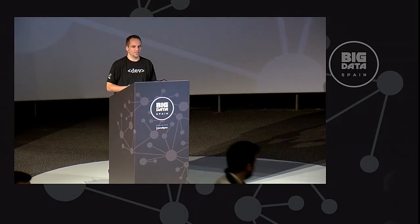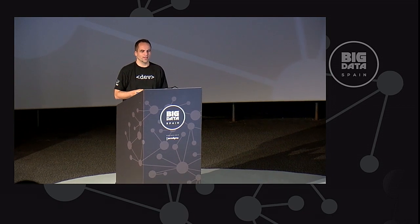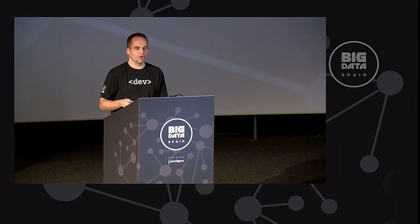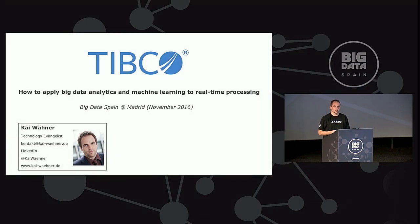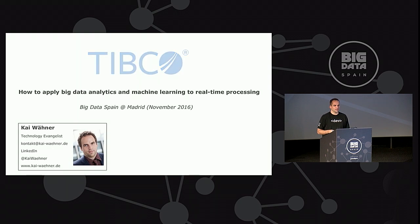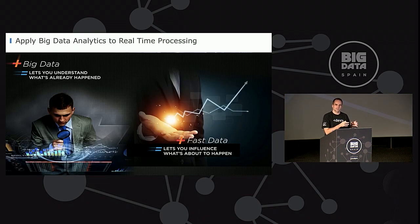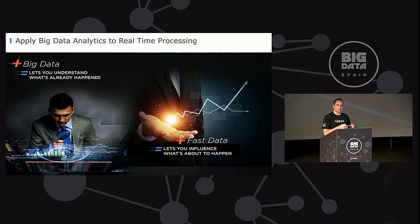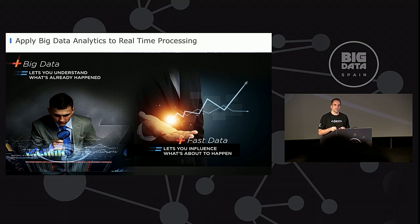Hi everybody, welcome to the session. Today I want to explain how to apply big data analytics and machine learning to real-time processing. We've heard a lot about that in the keynotes and it's a very hot topic. In the next 30 minutes I want to show you the two steps of doing that. The first step is to find patterns using machine learning in historical datasets, and then applying that to real-time processing. I'll show you both steps and a live demo of how people do that in real projects.